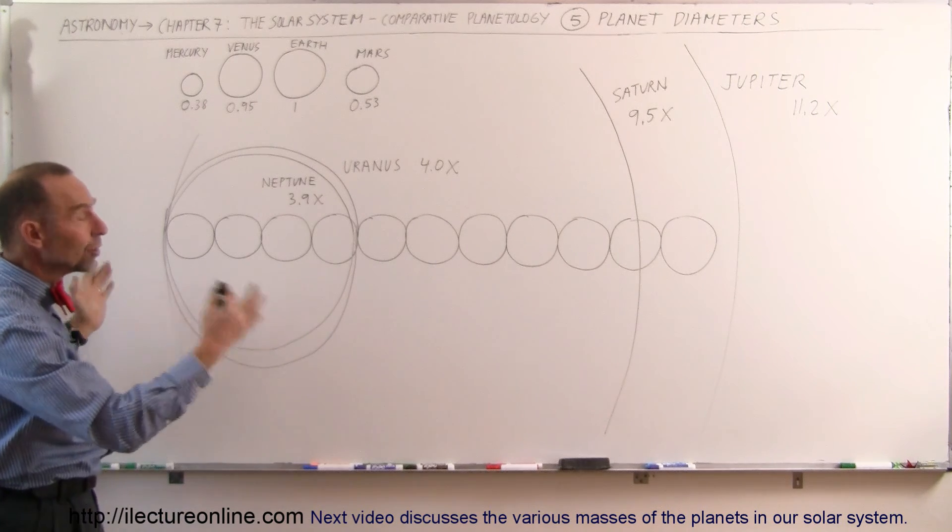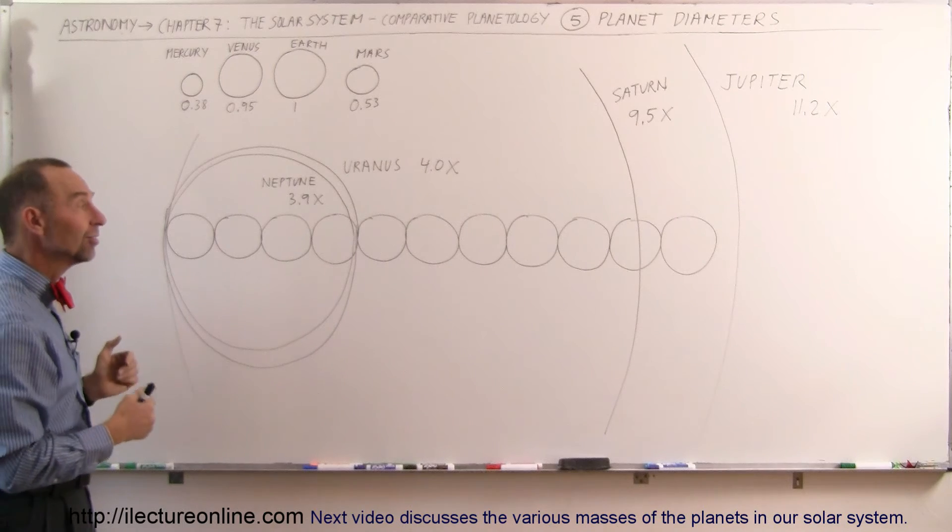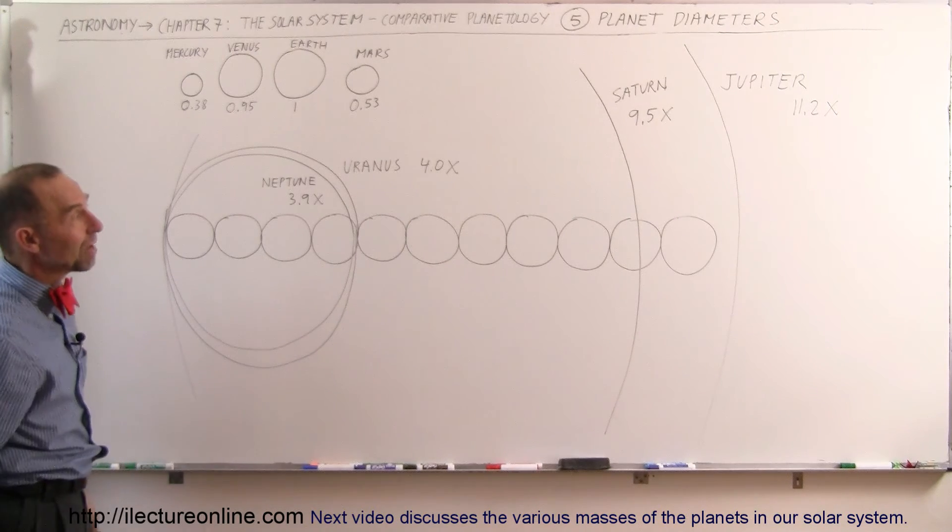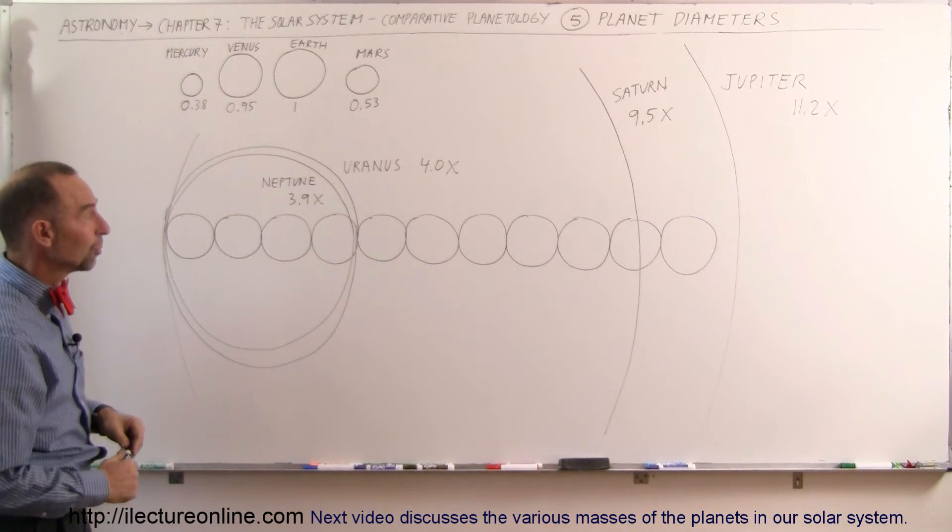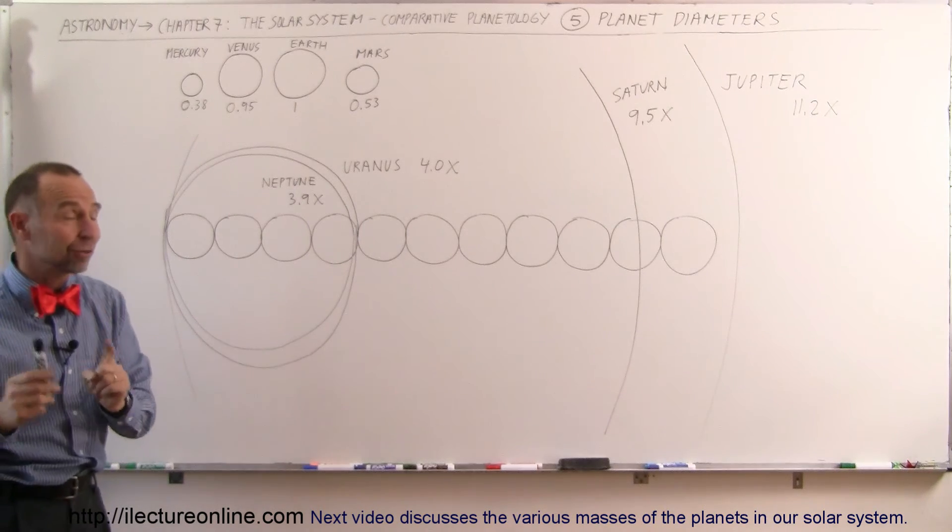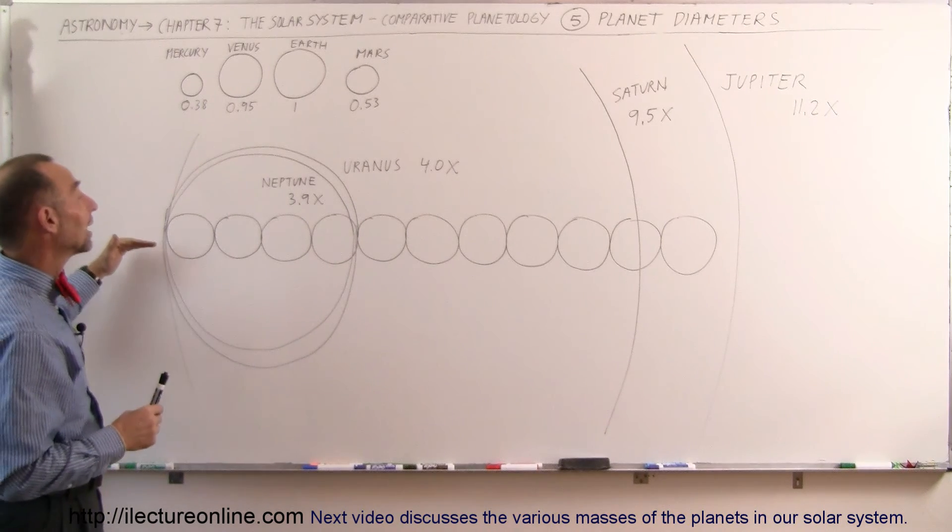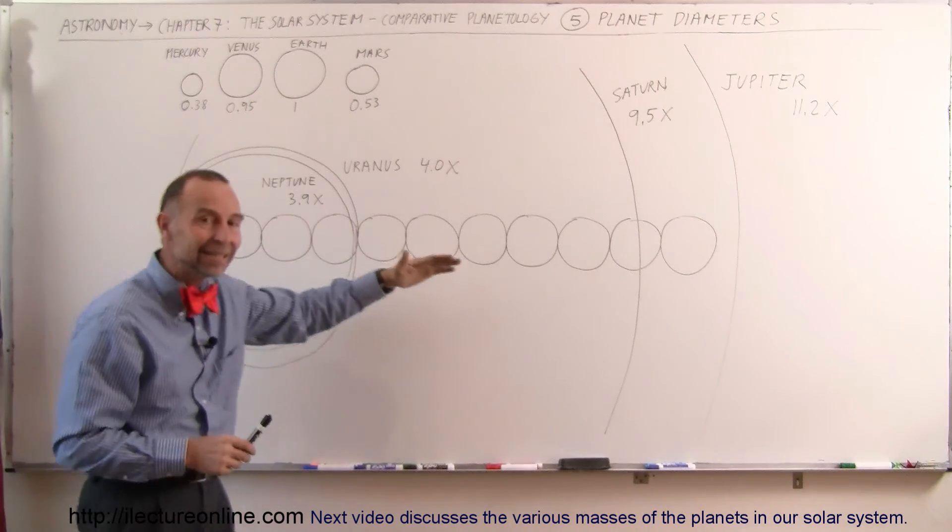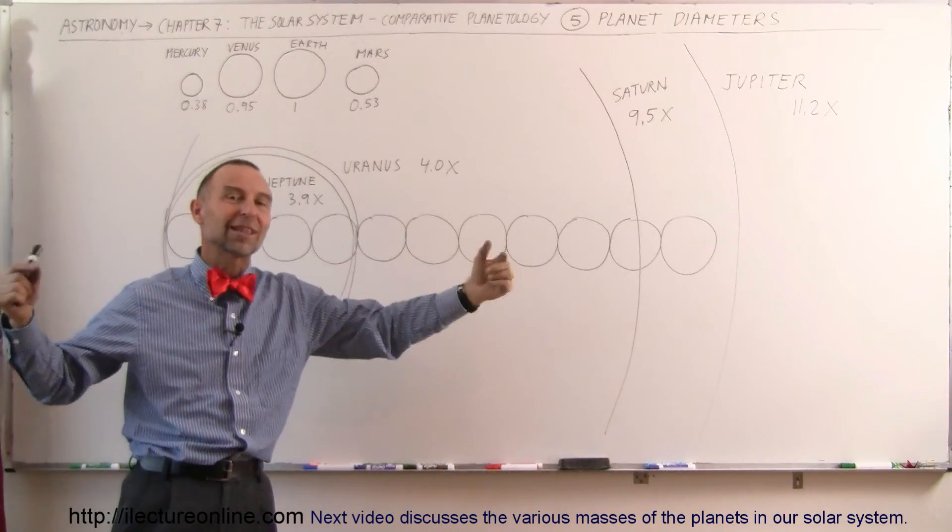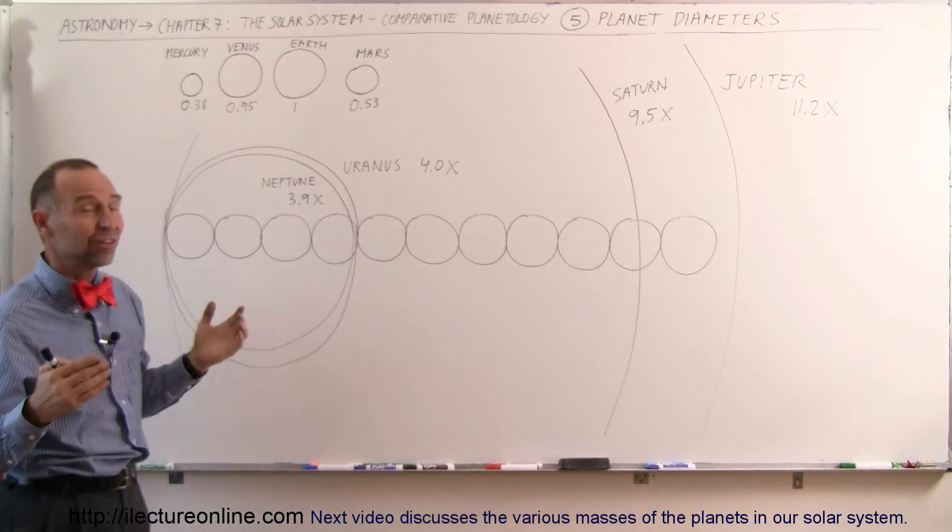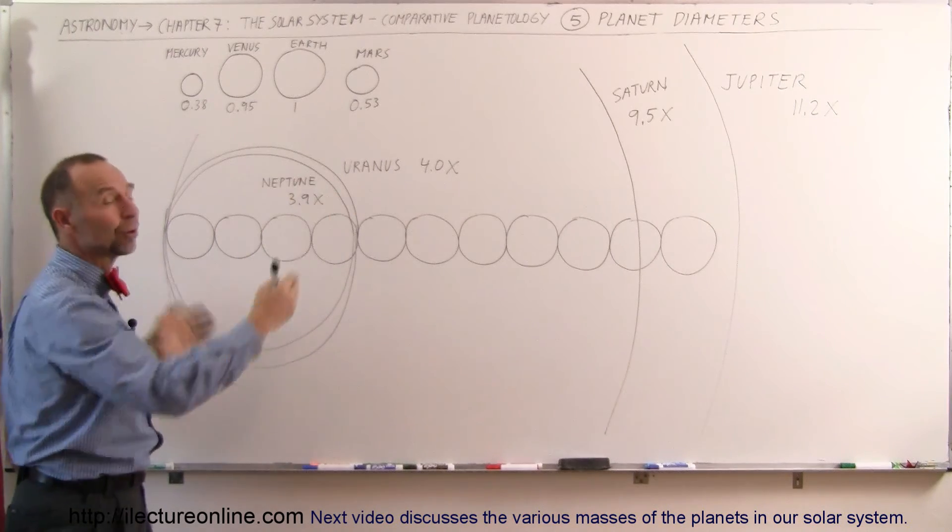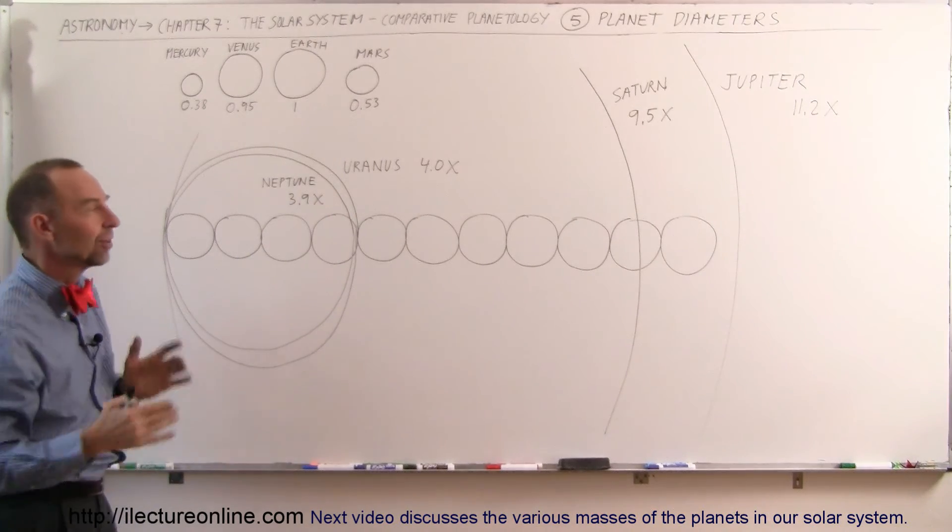Now, hopefully that gives you an appreciation for the relative size. And drawn like this, it's absolutely amazing when you think about the size of Saturn and Jupiter compared to the Earth. And then, if you compare that to the size of the Sun, you can line up about 110 Earths for the diameter of the Sun. In other words, the Sun is about 10 times the diameter of Jupiter and more than 100 times the diameter of the Earth.